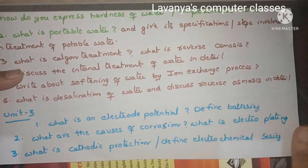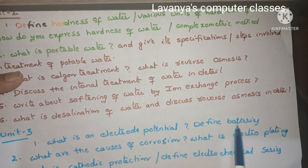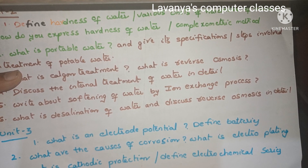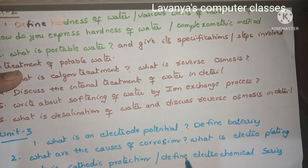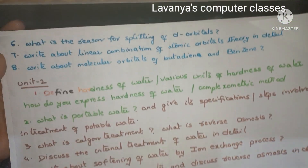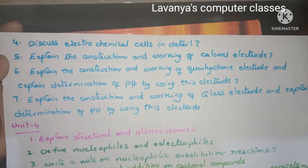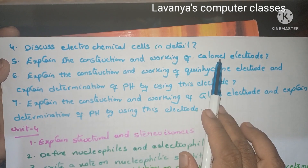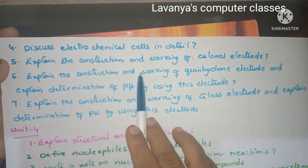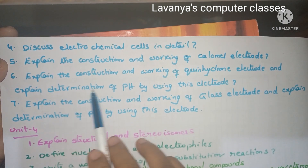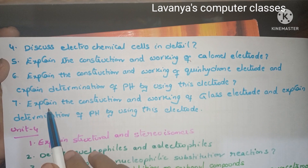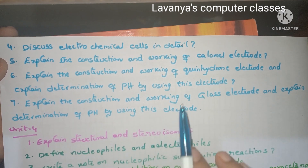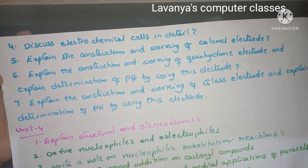Unit 3 questions: what is an electrode potential? Define batteries. What are the causes of corrosion? What is electroplating? What is cathodic protection? Define electrochemical series. Discuss electrochemical cells in detail. Explain the construction and working of a calomel electrode. Explain the construction and working of a standard hydrogen electrode and determination of pH using this electrode. Explain the construction and working of a glass electrode and determination of pH using this electrode. These are the important questions in Unit 3.